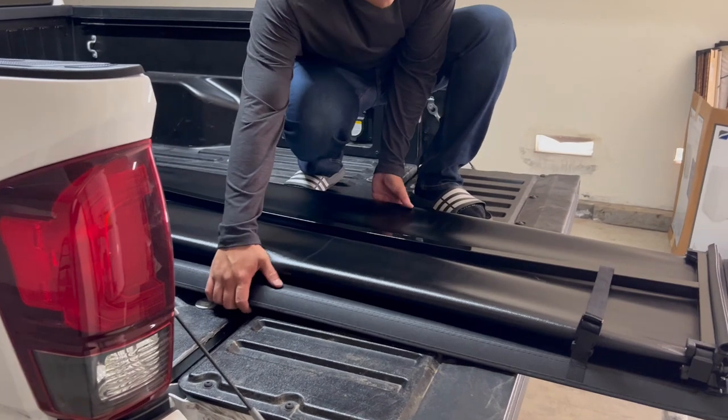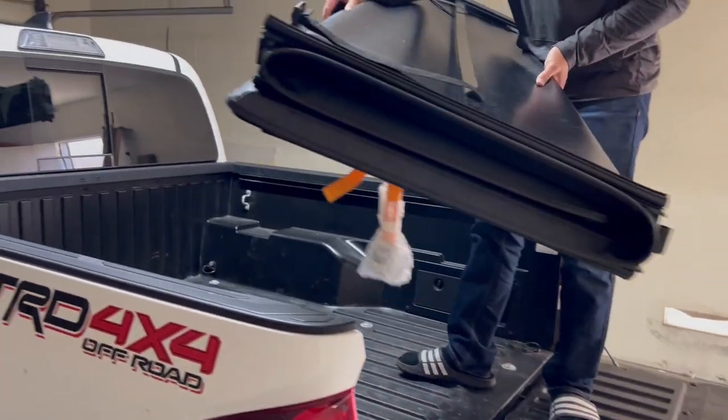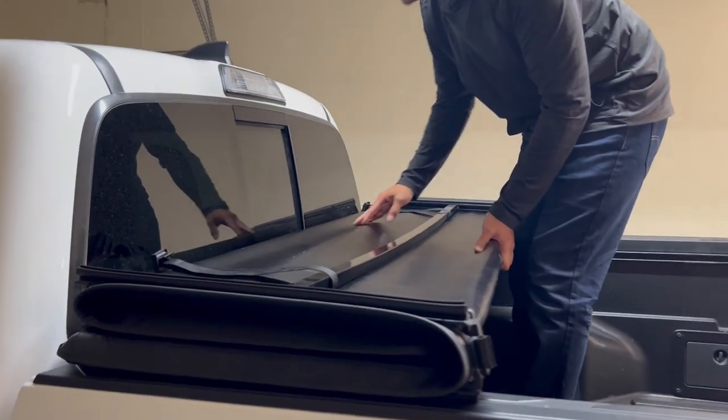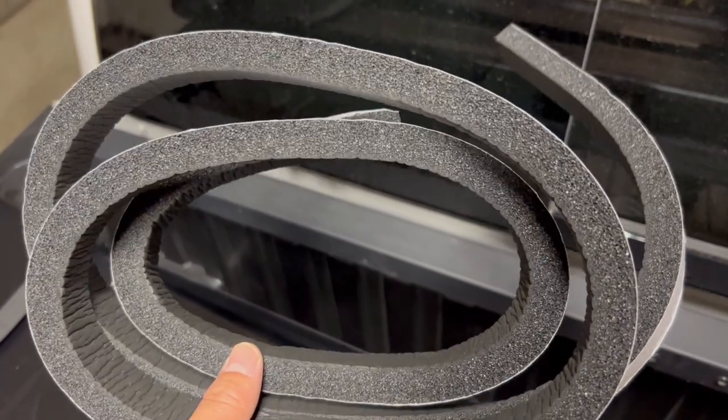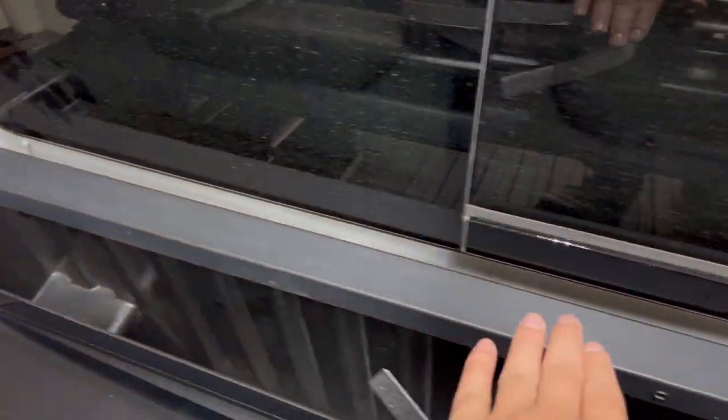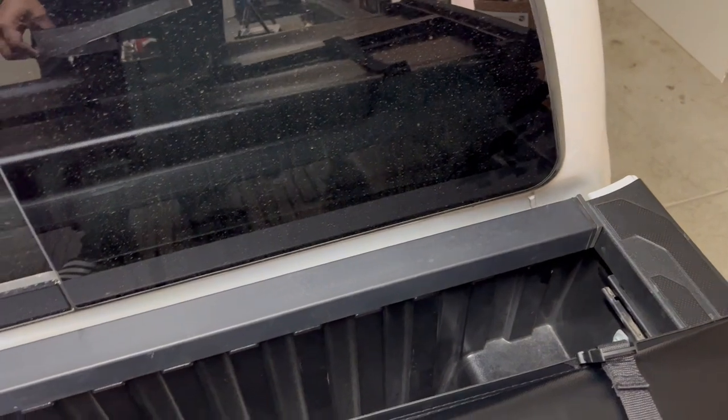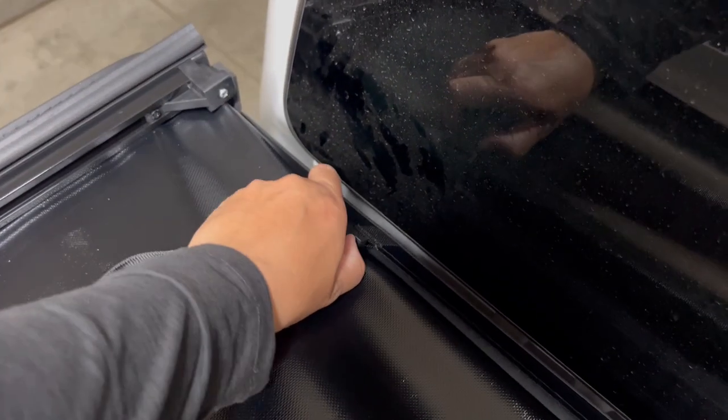And now you'll want to go ahead and position your tonneau cover at the front of the bed. So they provided you a seal strip to put at the front of the bed to keep it waterproof. In this case, I don't think I'm going to install it because I don't think there's going to be a big enough gap for water to come in. Next thing you'll do is unbuckle these straps.